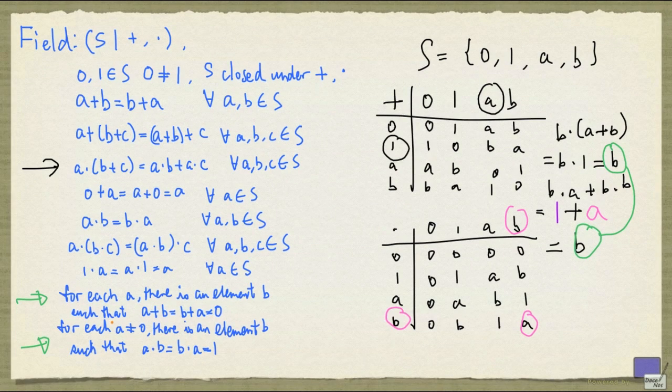And for the last rule here, 1 times 1 is 1, a times b is 1, and b times a is 1. So these two rules are satisfied by this structure here.